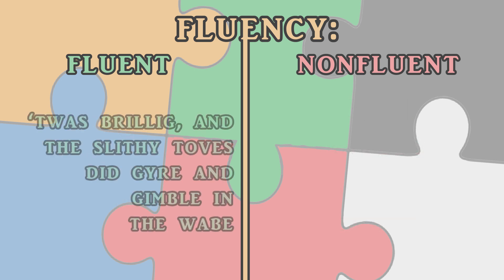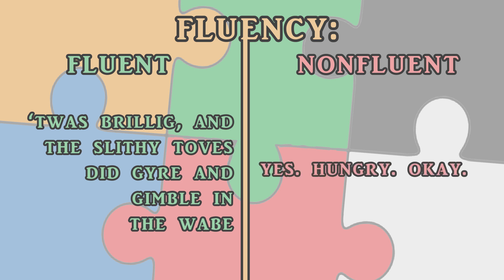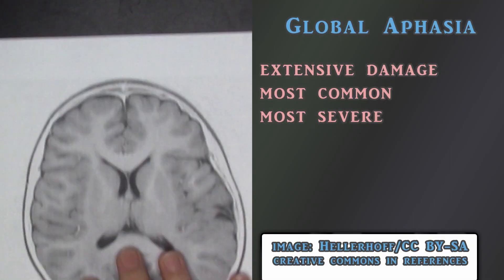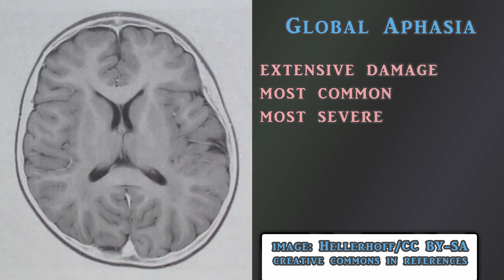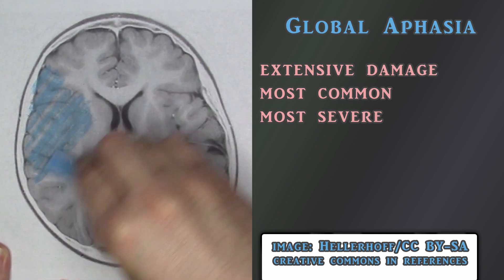Speaking rhythmically in full sentences, even if some of the words are nonsense, is considered fluent, while speaking in incomplete sentences using one or two words at a time, and ignoring typical grammatical structure, is considered disfluent.